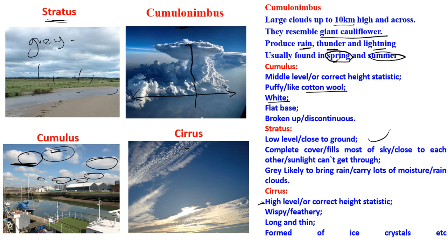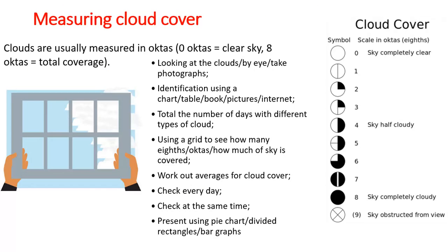Lastly, we have the cirrus cloud, which is a high-level cloud. It is wispy or feathery — like the feathers of birds — usually long and very thin. It is formed of ice crystals. Once you look at a cloud and can identify these features, you are good to go.